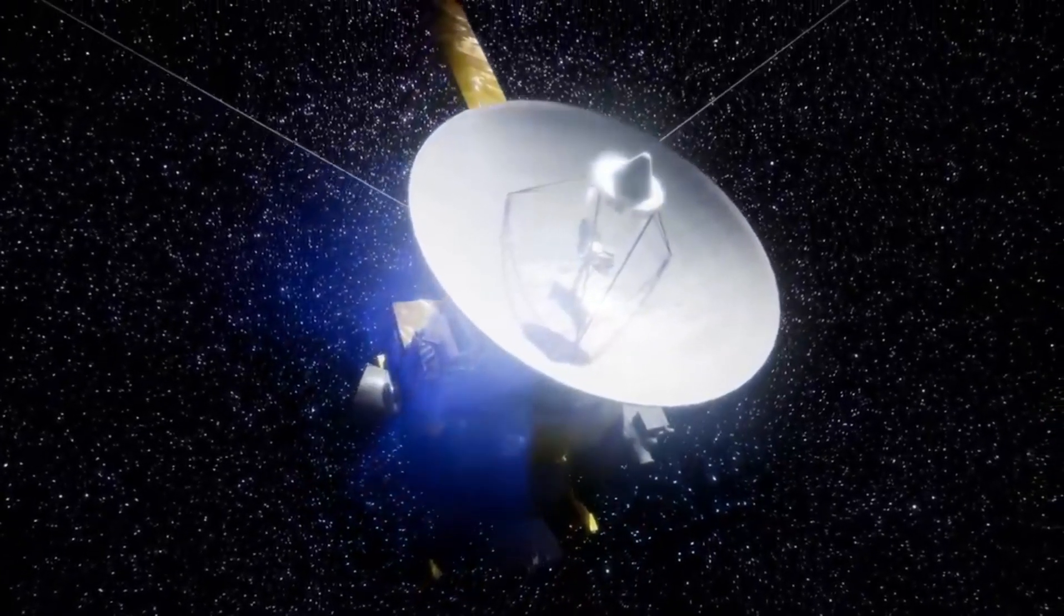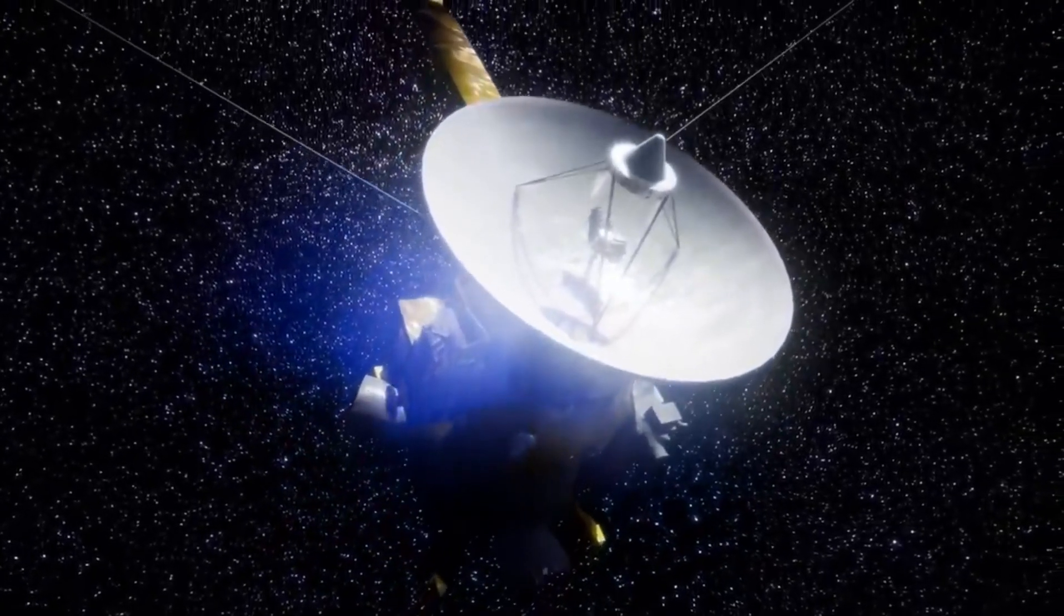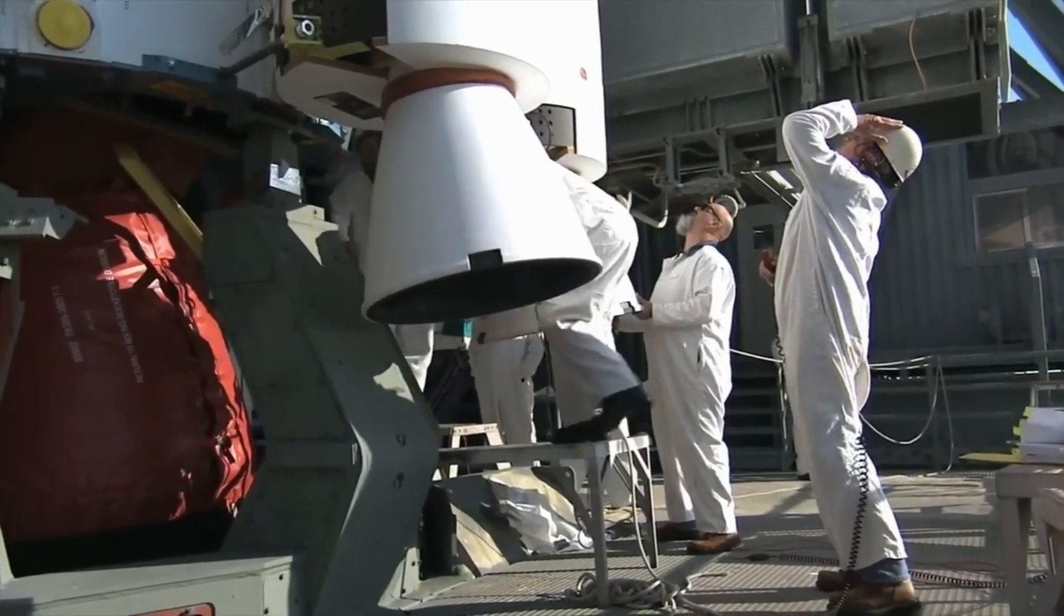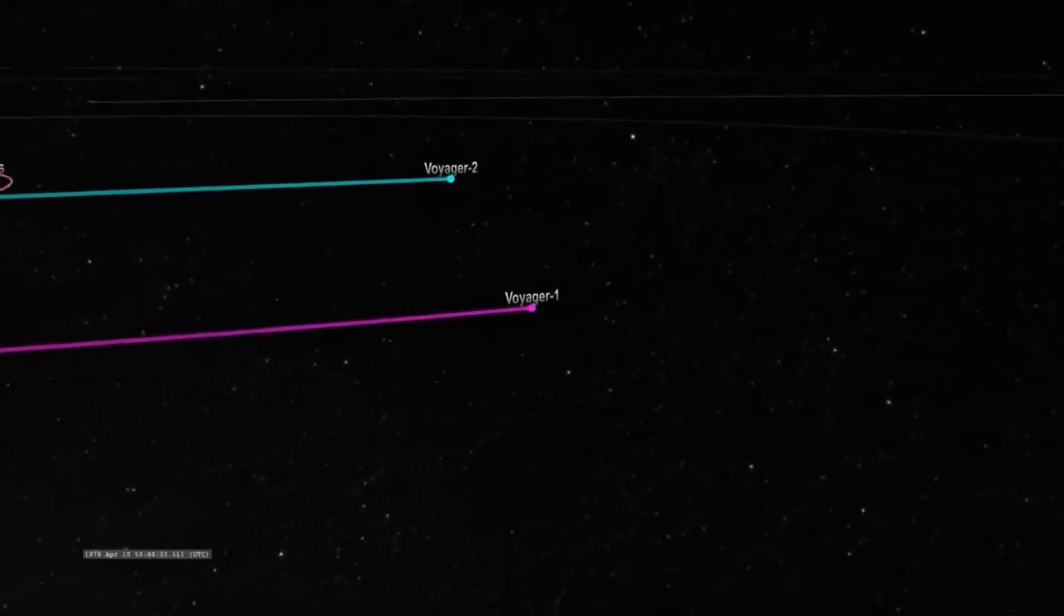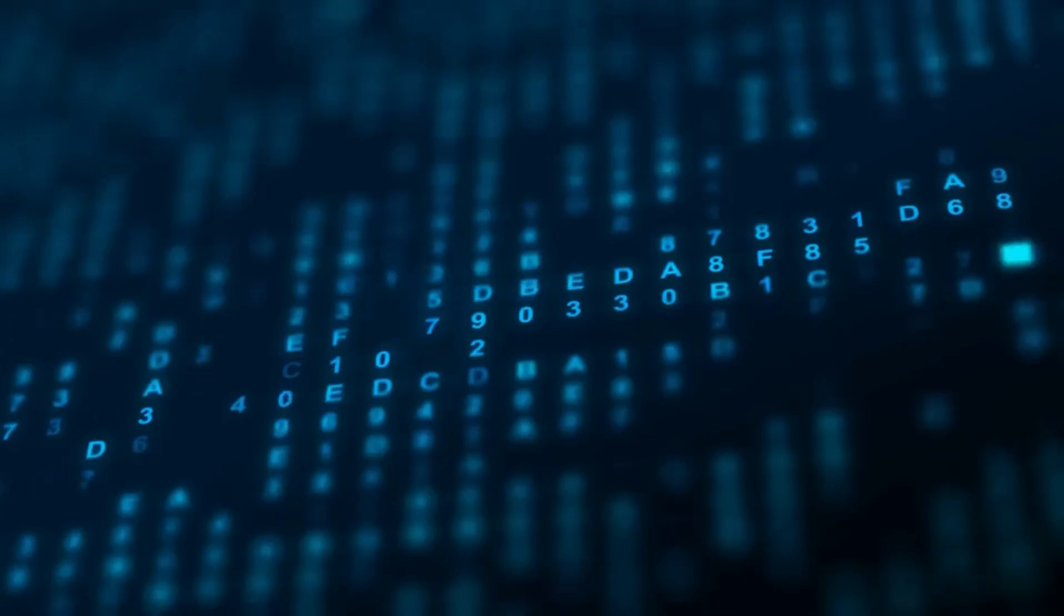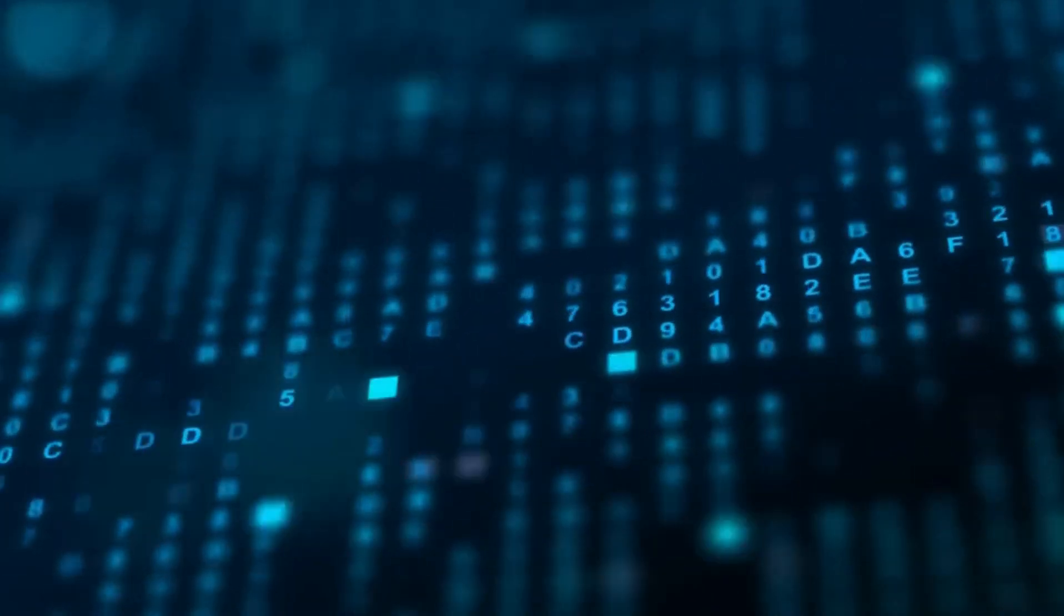NASA has taken steps to extend the operational lifespan of the Voyager spacecraft. Non-essential components and heaters have been turned off to conserve energy, allowing the explorers to continue their mission into the next decade. The mission is estimated to end in 2030.